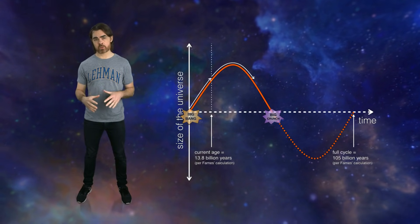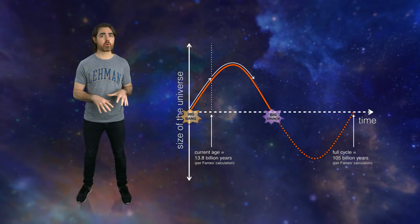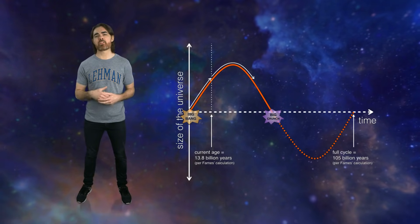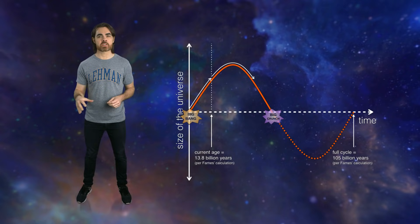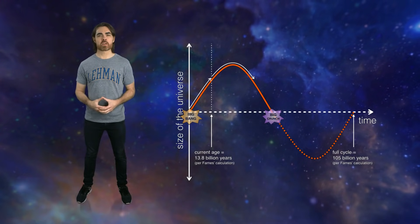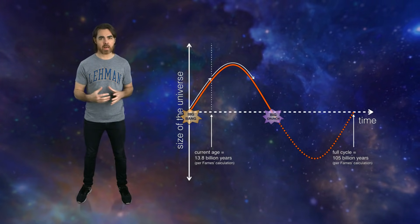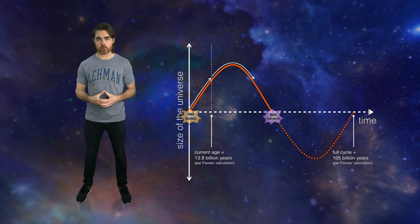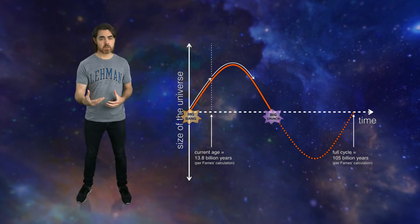Farnes calculates an age for this universe of 13.8 billion years, assuming a very low negative energy density. But that really just corresponds to the very first straight part in the rise of the sine curve, which is almost a constant expansion rate.